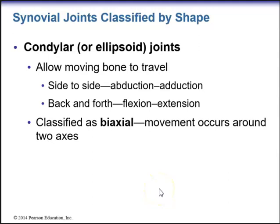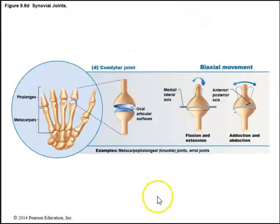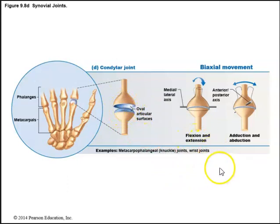A condylar or ellipsoid joint allows side-to-side movements (abduction and adduction) and back-and-forth movements (flexion and extension), making it biaxial — movement around two axes. Examples include the metacarpophalangeal joints (knuckles) and the wrist joints. These joints have oval articular surfaces.